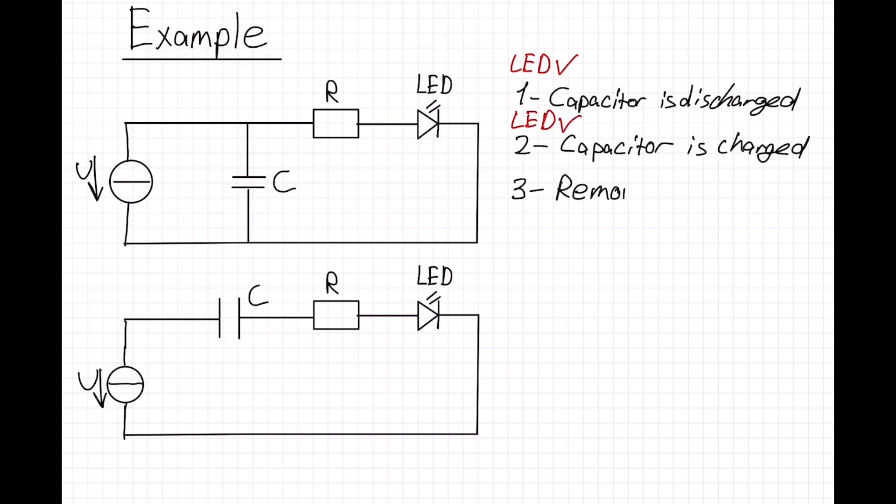Then at the third stage, we are removing our voltage source from the circuit. We had energy storage in our capacitor, so our LED keeps turning on.